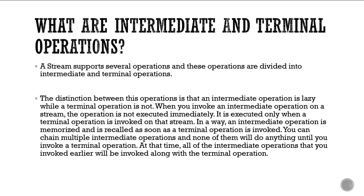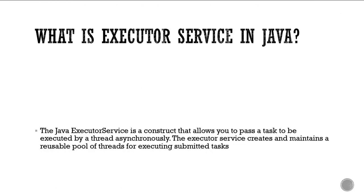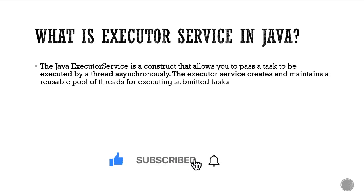When you invoke an intermediate operation on a stream, the operation is not executed immediately — it is executed only when a terminal operation is invoked on that stream. In a way, an intermediate operation is memorized and is recalled as soon as a terminal operation is invoked. You can chain multiple intermediate operations and none of them will do anything until a terminal operation is called.